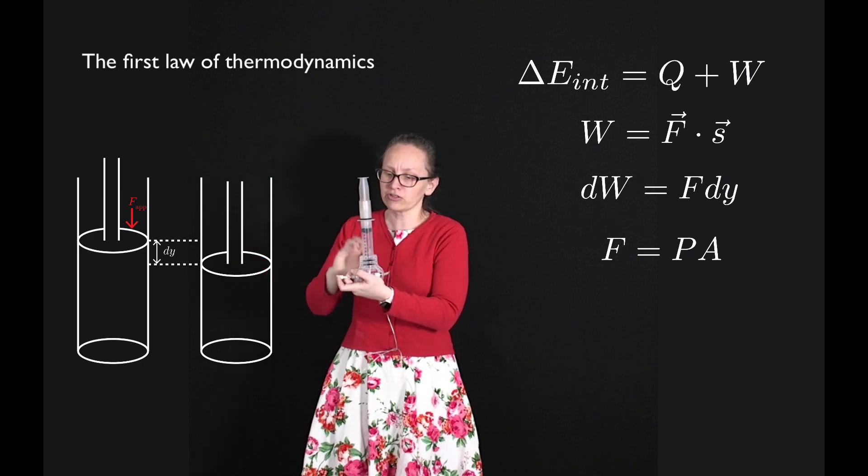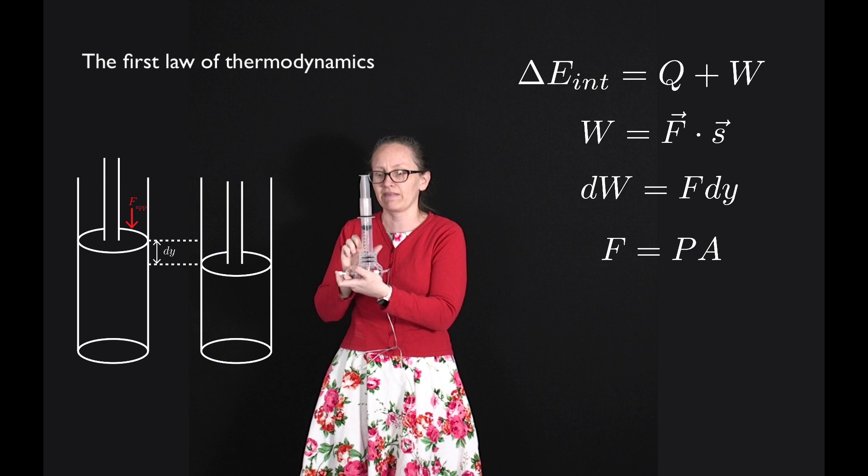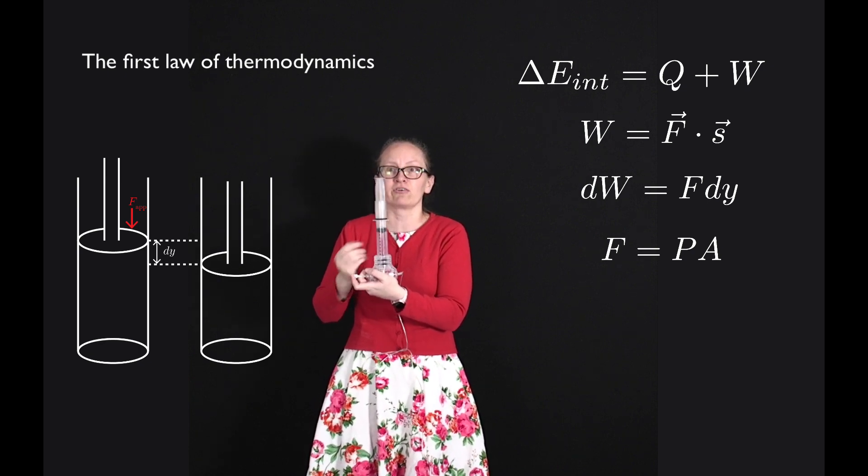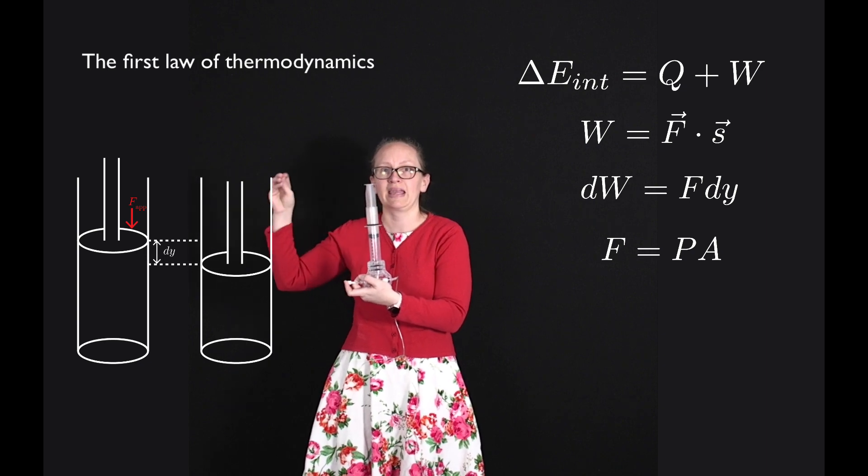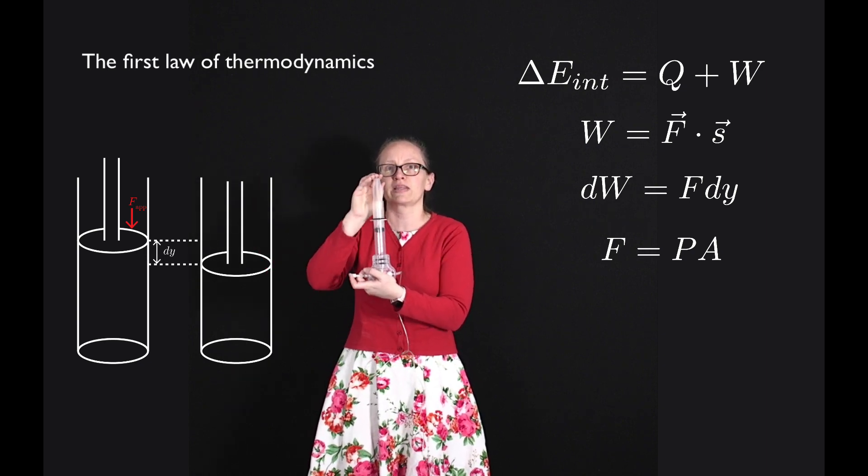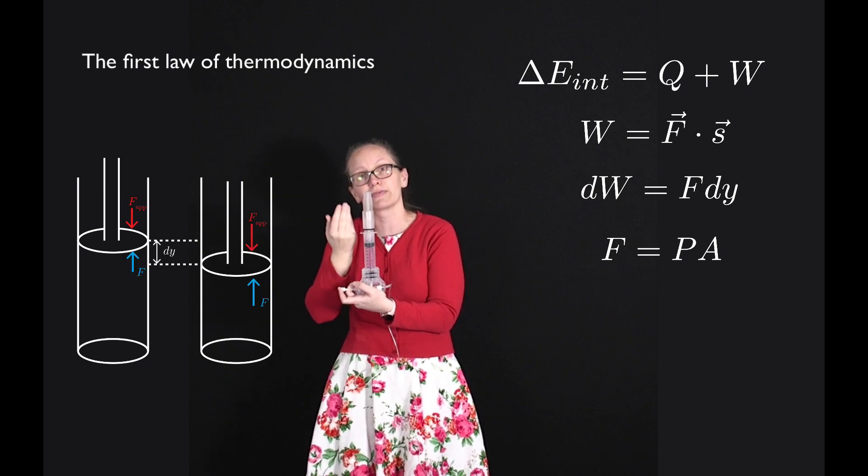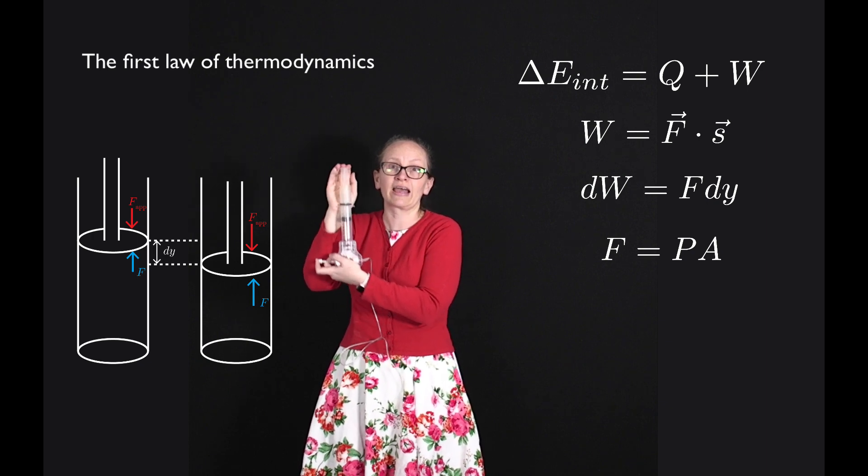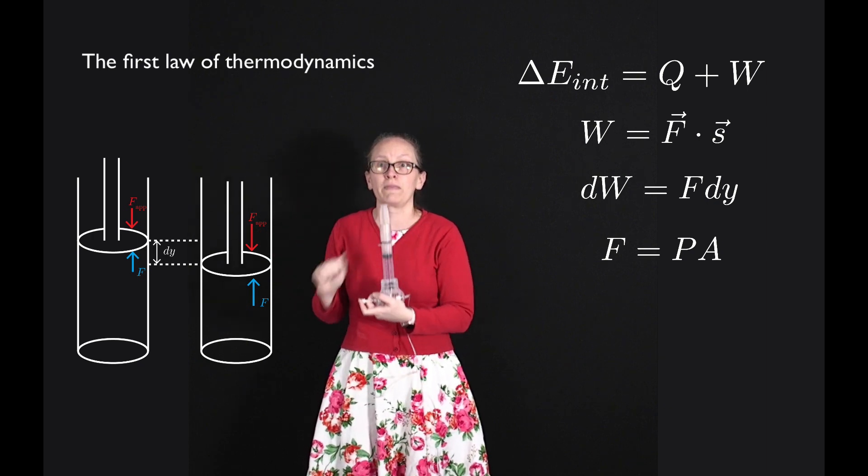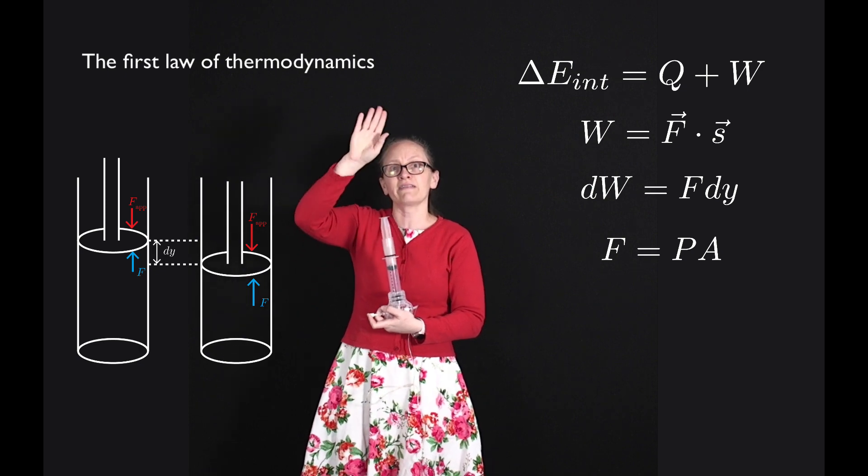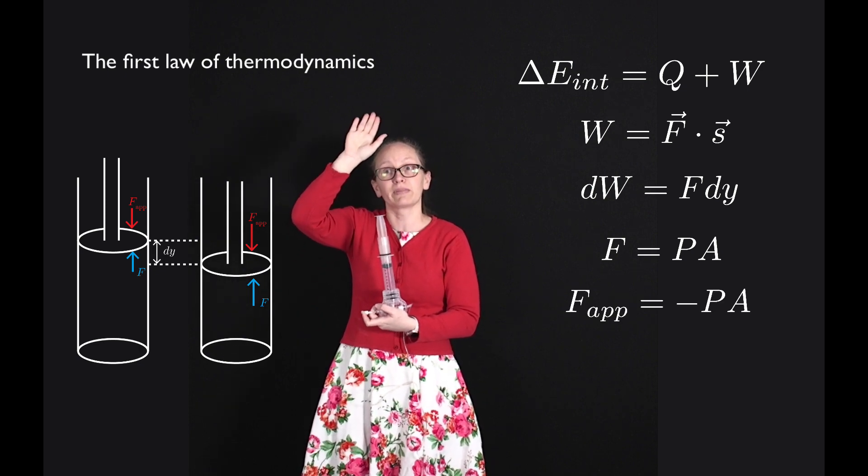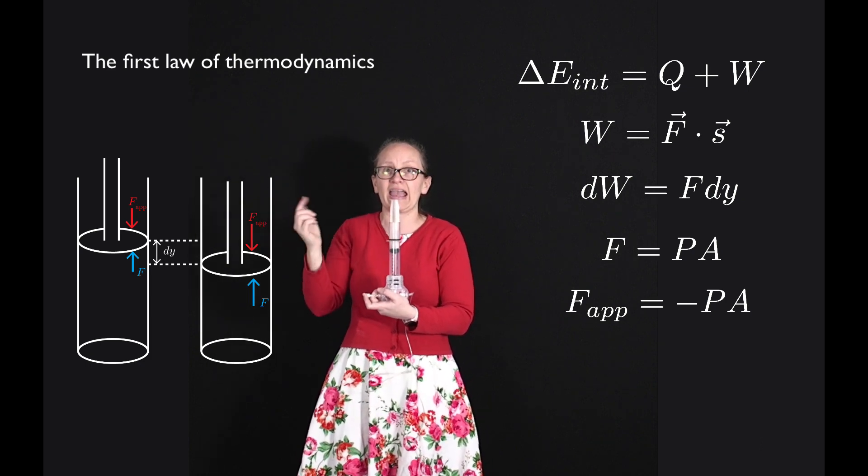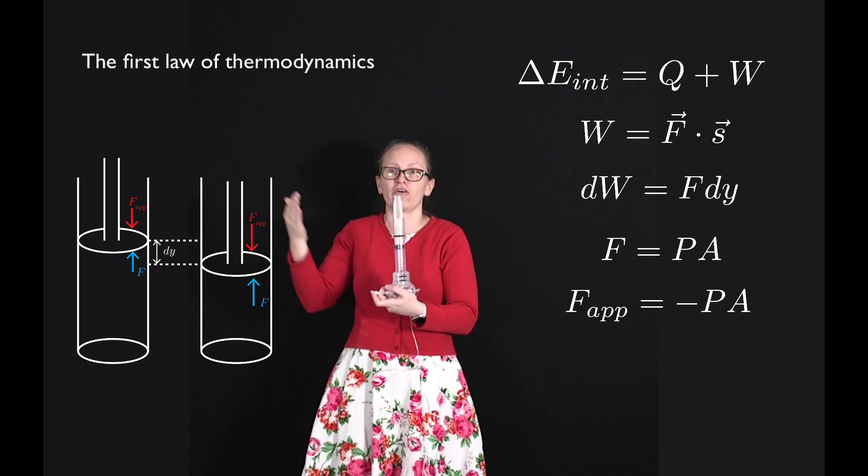So the molecules of gas inside my syringe are applying a force upwards on the syringe. So they're applying a force upwards equal to PA. So if I think about the relationship between the force that I'm applying and the force that the gas molecules are applying, whenever it's in equilibrium then these two forces are equal. They are in opposite directions though. So I can say that F, where F stands here for the applied force, is equal to minus PA, where P is the pressure of the gas and A is the cross-sectional area of my syringe.